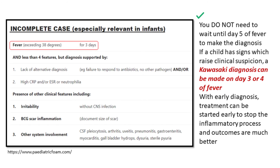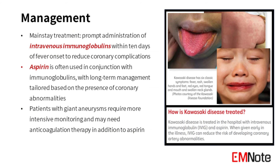Early diagnosis and treatment are crucial, especially to detect coronary aneurysms that can develop within the first week of the disease. The mainstay of treatment involves the prompt administration of intravenous immunoglobulins within 10 days of fever onset to reduce coronary complications. Aspirin is often used in conjunction with immunoglobulins, with long-term management tailored based on the presence of coronary abnormalities. Patients with giant aneurysms may need anticoagulation therapy in addition to aspirin.